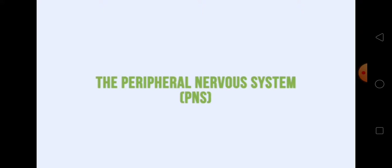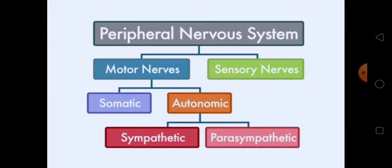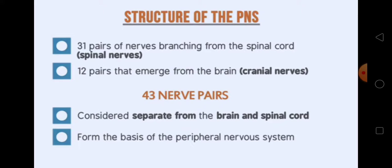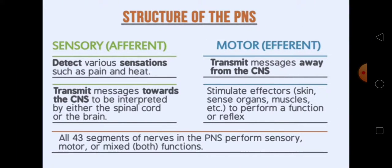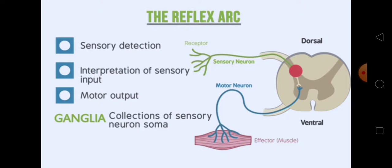Hello everyone. In the previous video we talked about the peripheral nervous system, also known as PNS. We discussed the PNS in a flow chart, the structure of the PNS, and the 43 nerve pairs. If you want to learn about those topics, please search the channel and you will find all those videos. Here we will talk about the reflex arc.